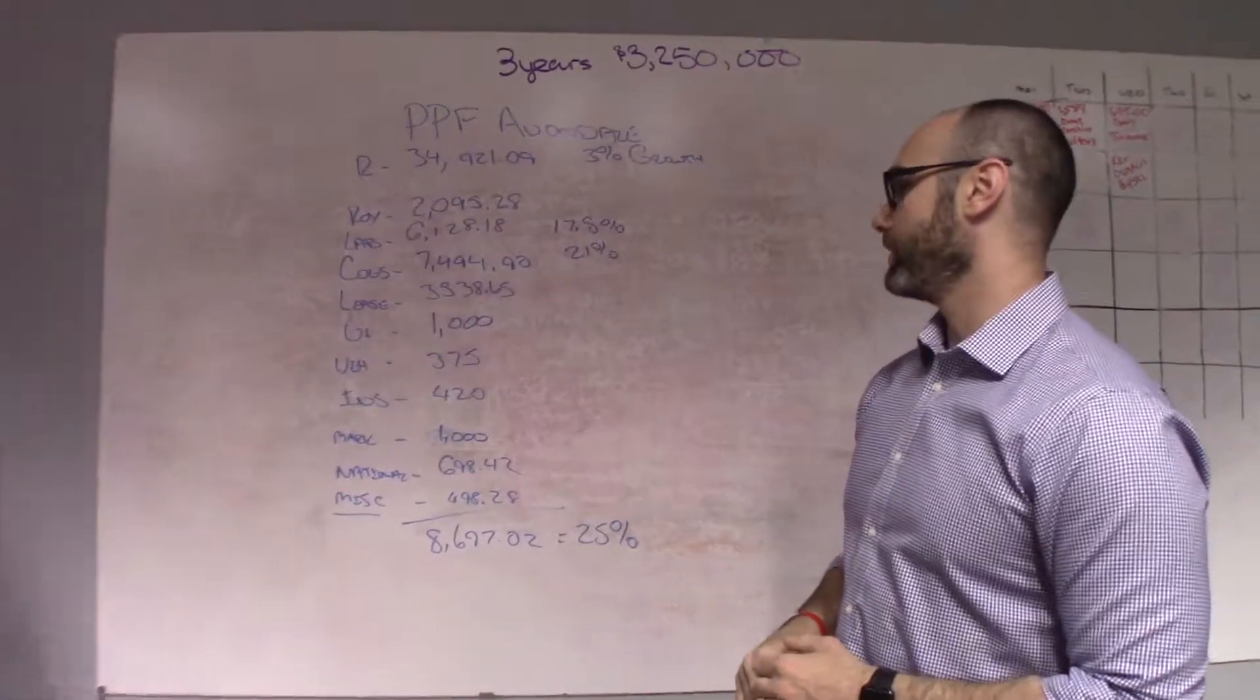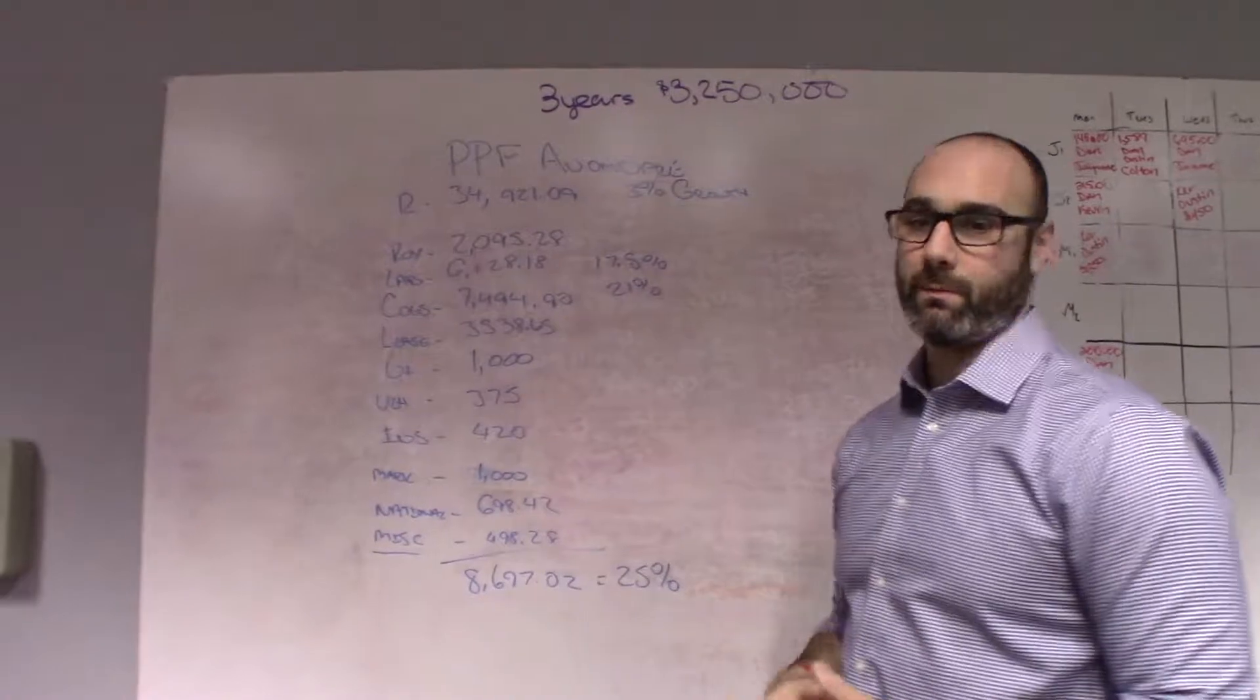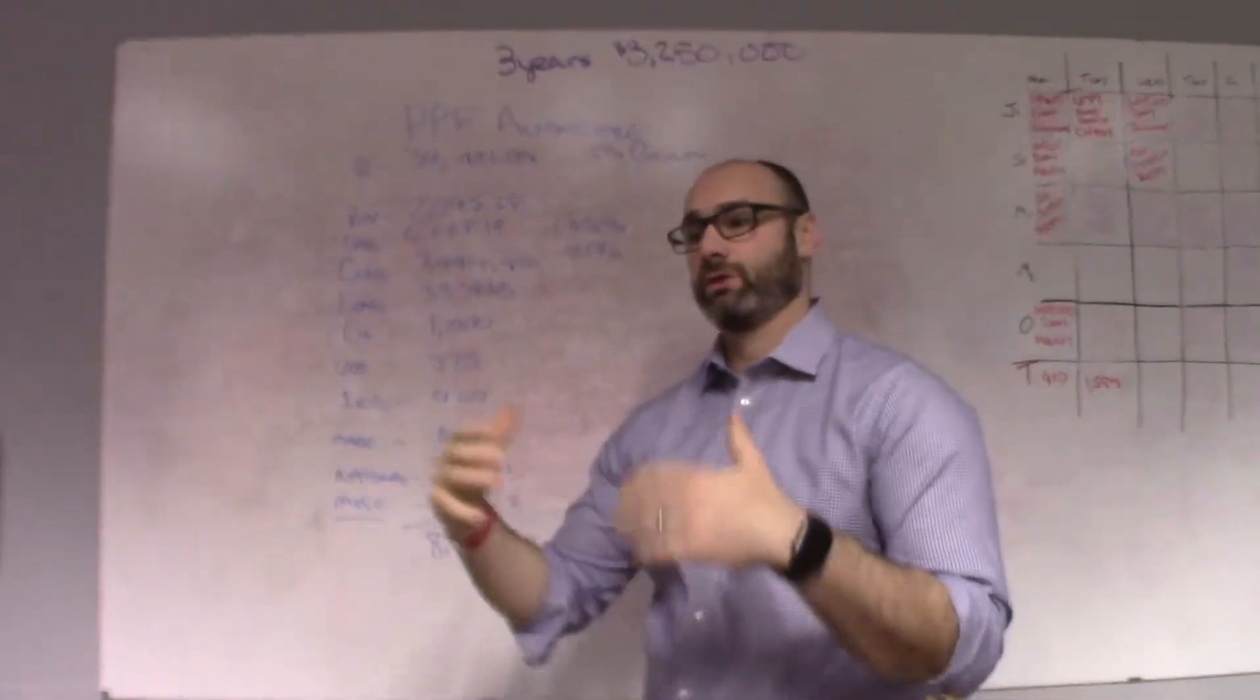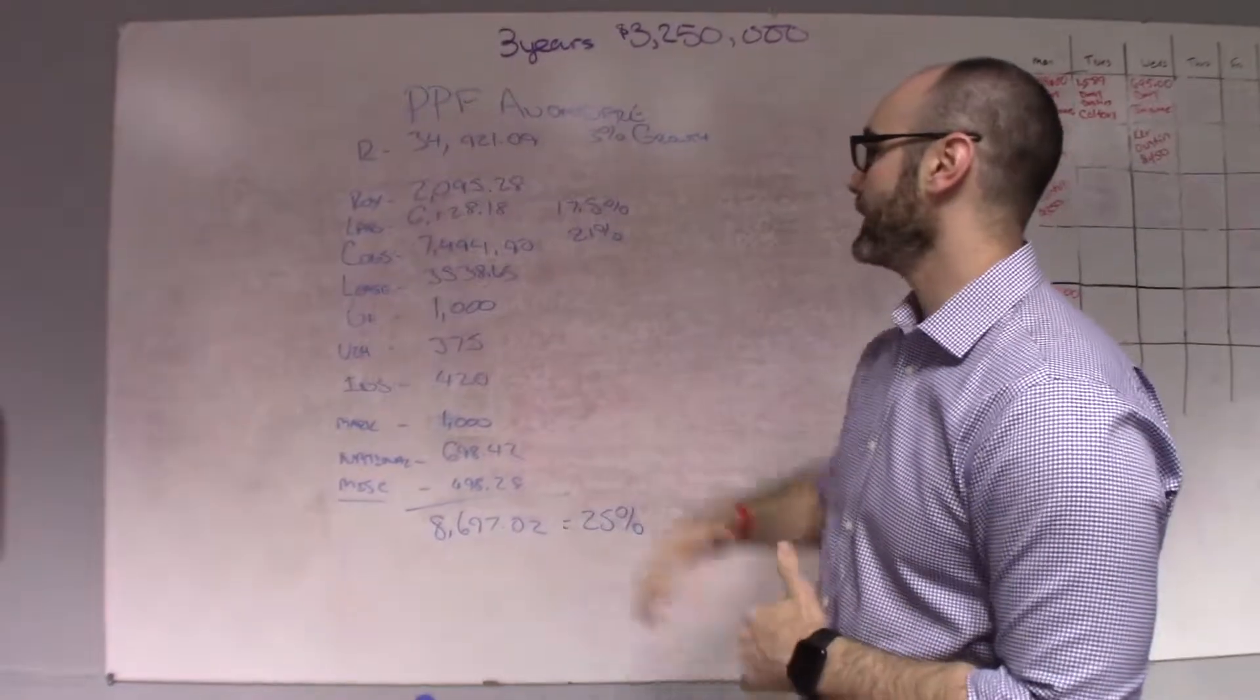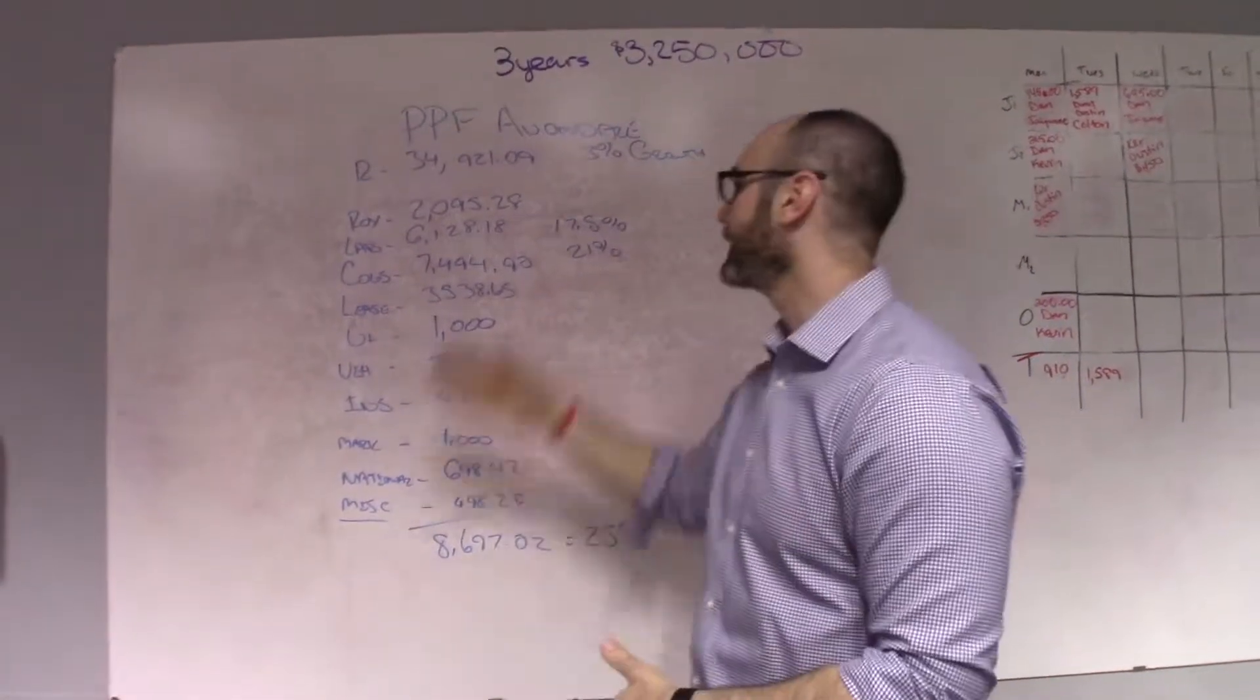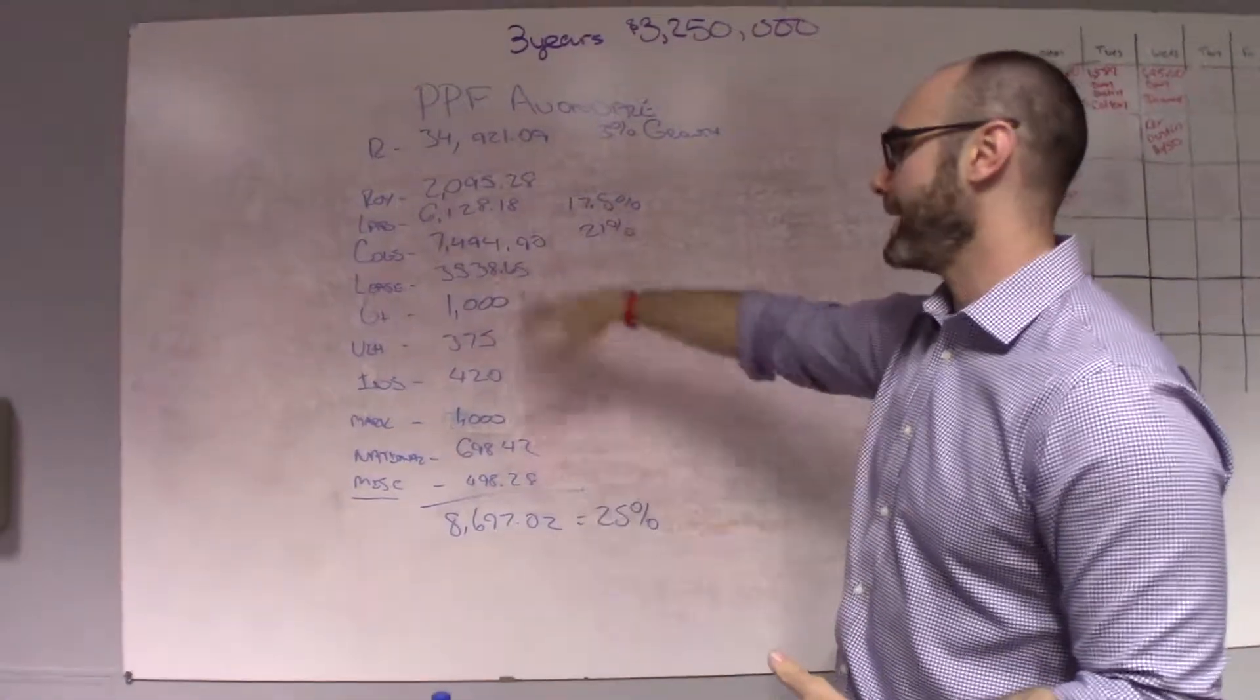Cost of goods, $7,494.09 down to 21%. Now, these two numbers, labor costs should be anywhere between 22% to 25% for a pretzel factory with myself actually not working in the store. I did work in the store a couple hours, so that also helped bring that down.